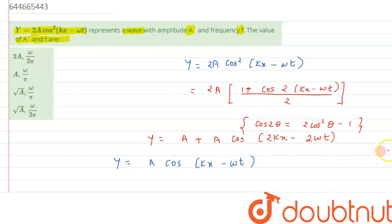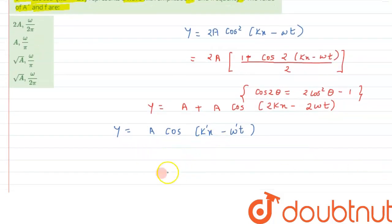So this is the standard equation we know. So let's represent this by k dash and omega dash. Just for the sake of comparison, now if we compare it, so we will get the value of amplitude as a.